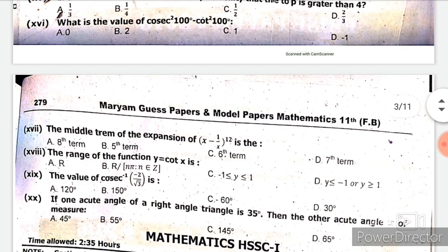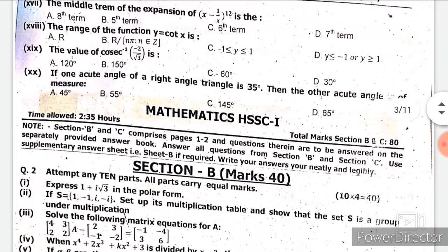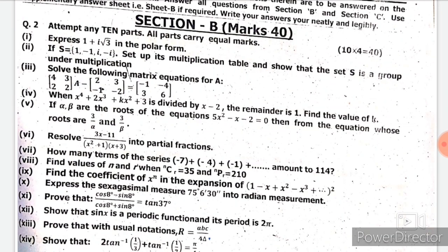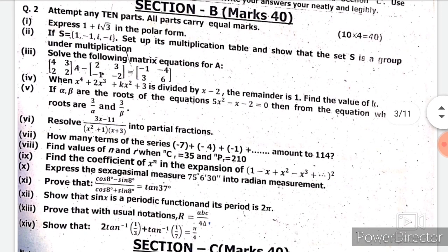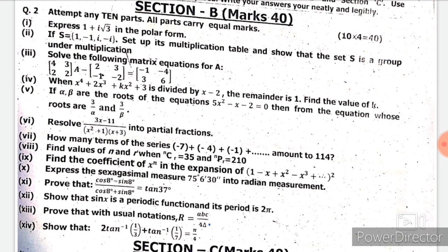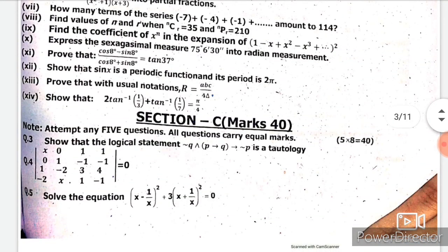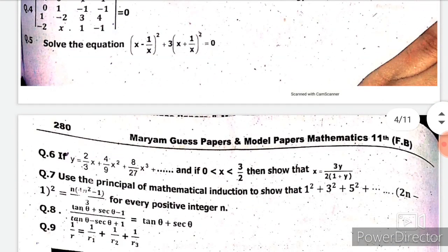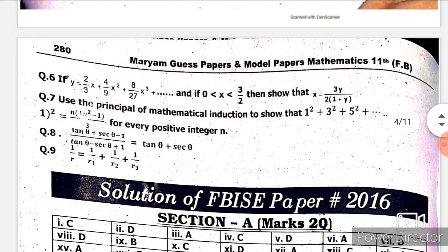There are 20 MCQs in Section A. Then we have Section B which contains 40 marks — we have to attempt 10 out of 14 questions. Then we have Section C which also contains 40 marks — we have to attempt 5 out of 7 questions: question numbers 3, 4, 5, 6, 7, 8, and 9.